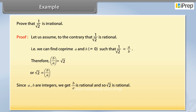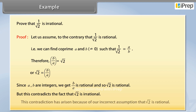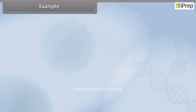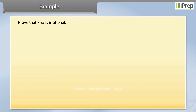Since a and b are integers, we get b upon a is rational, and so square root 2 is rational. But this contradicts the fact that square root 2 is irrational. This contradiction has arisen because of our incorrect assumption. Example: prove that 7 square root 5 is irrational.